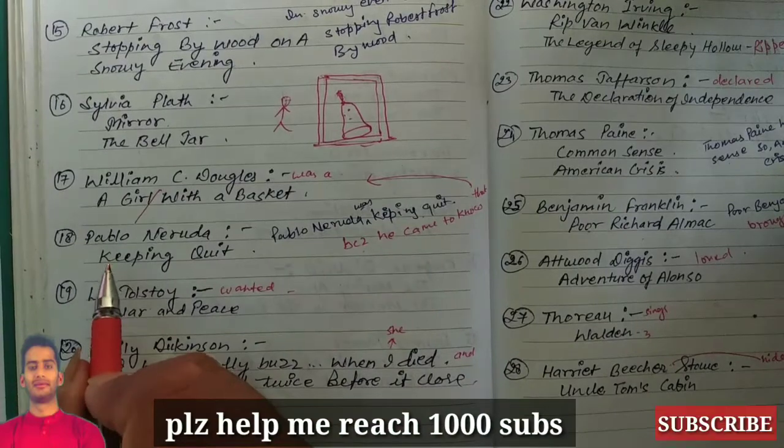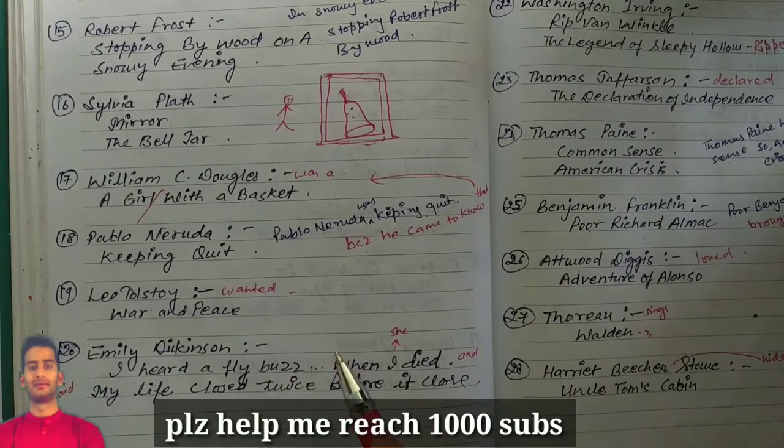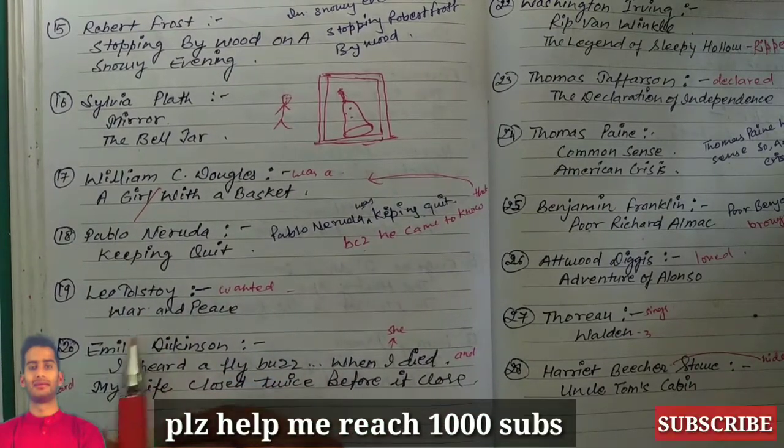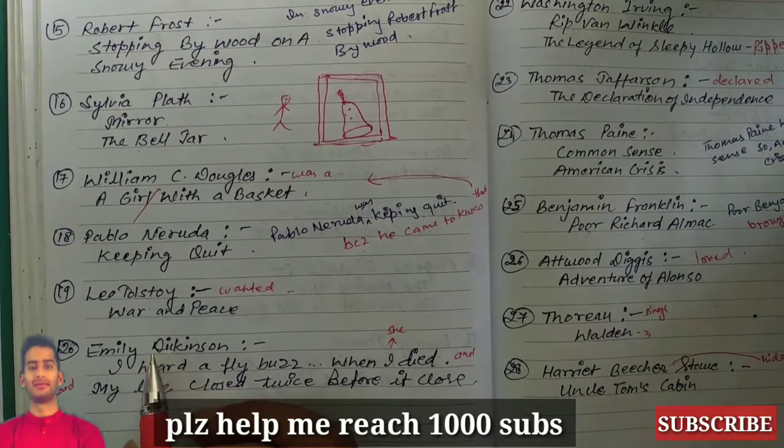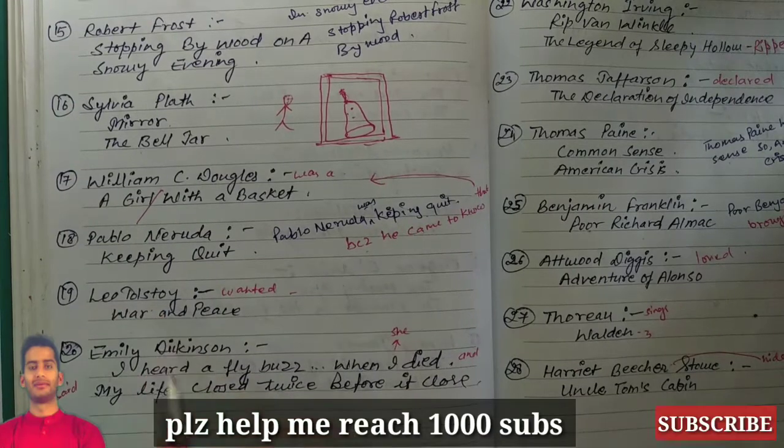Now next one is Leo Tolstoy wanted War and Peace together. So it is so amazing that he wanted two things together, War and Peace. So who wanted the War and Peace together? He was Leo Tolstoy.